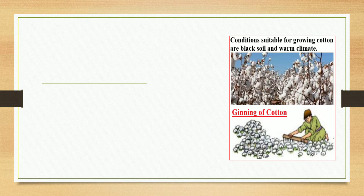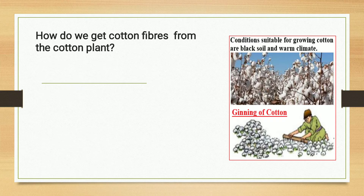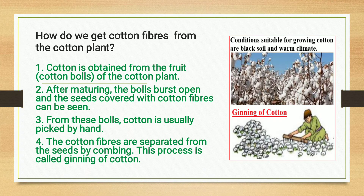Conditions suitable for growing cotton are black soil and warm climate. Cotton is obtained from the fruit of the cotton plant, which is called cotton balls. After maturing, the balls burst open and seeds covered with cotton fibers can be seen. Cotton is usually picked by hand. The cotton fibers are then separated from the seeds by combing. This process is called ginning of cotton.